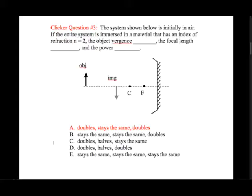More conceptually: changing the index of refraction changes the way waves travel, altering their curvature, which means vergence and power change because those deal with wavefronts. The focal length, however, does not change with the medium. So vergence and power both double, while the focal length stays the same.